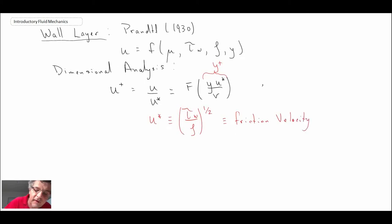And so this here is equation one. And it's also known as the law of the wall. And so that was Ludwig Prandtl, 1930.